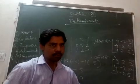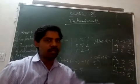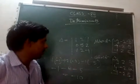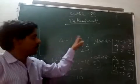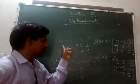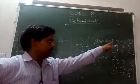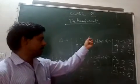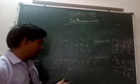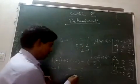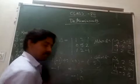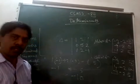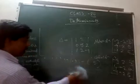We have verified from all 3 rows — each gives -10. You can verify from the 3 columns as homework. So what we have done is: made a matrix from the determinant, found minor A, found cofactor A, then multiplied every element by its cofactor to get the value of the determinant as -10. This is one example to understand minors and cofactors properly.